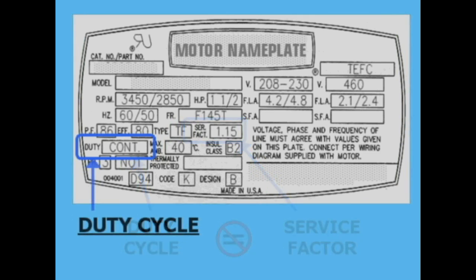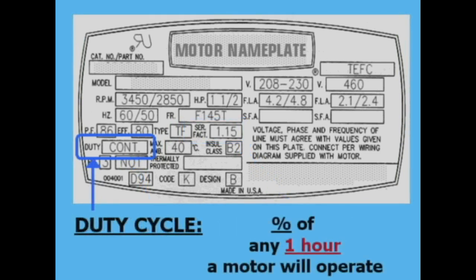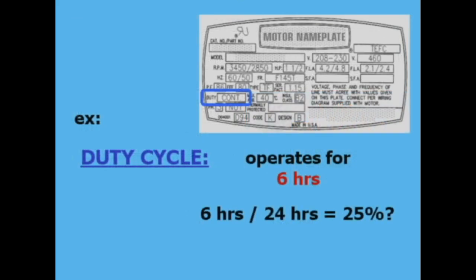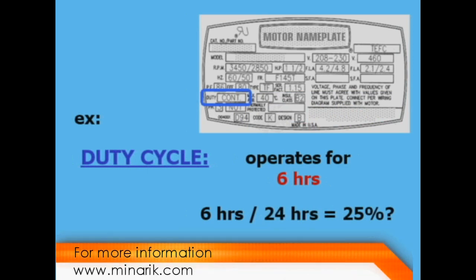While the definition of duty cycle can vary, it most often refers to the percent of one hour that a motor can operate at rated speed and load. Most motors will reach steady state temperature by that time.